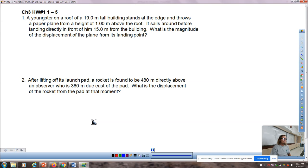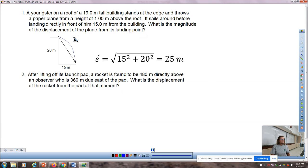Question number one says the youngster on the roof, 19 meters tall, stands at the edge and throws a paper plane one meter above, so we can make the combined height a total of 20 meters. It sails around before landing directly in front of the person 15 meters in front of the building. What is the magnitude of the displacement?